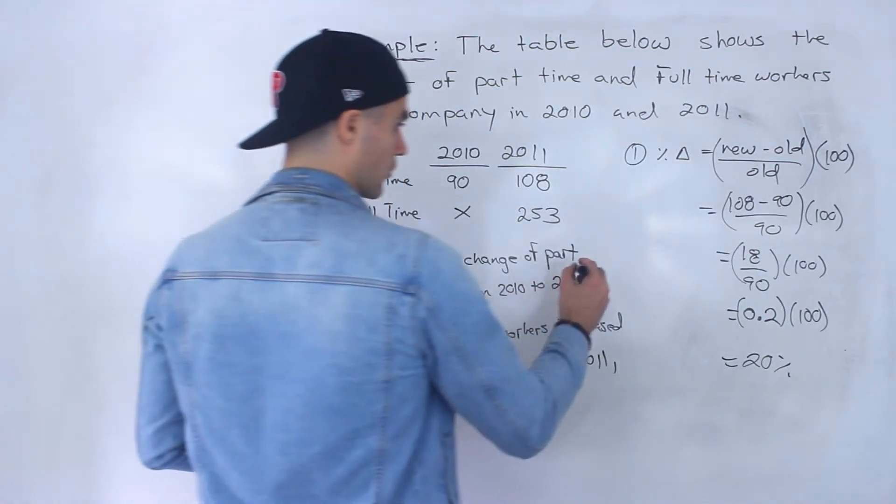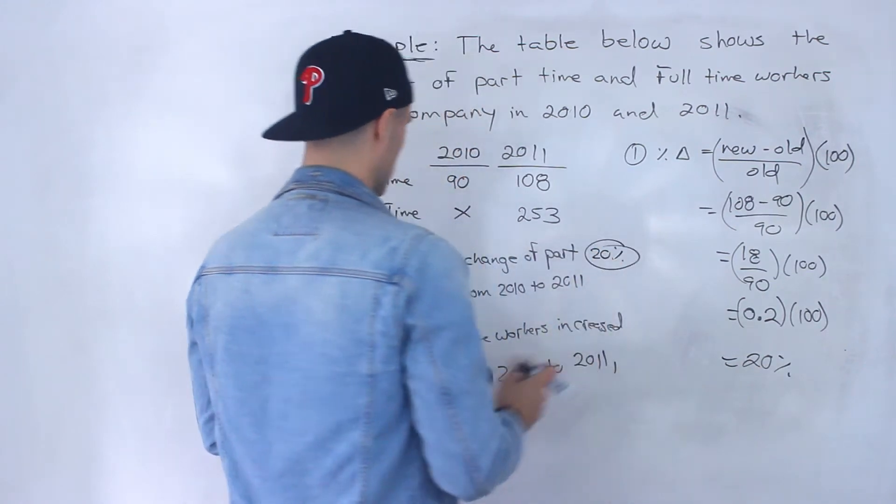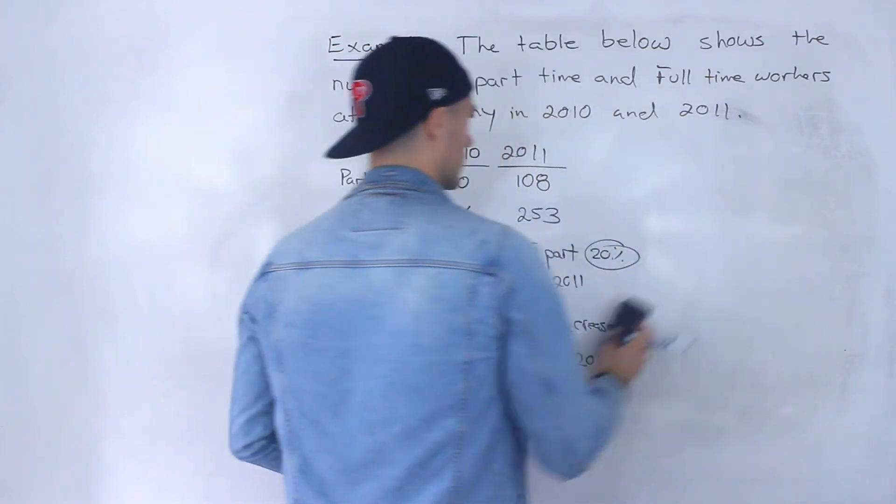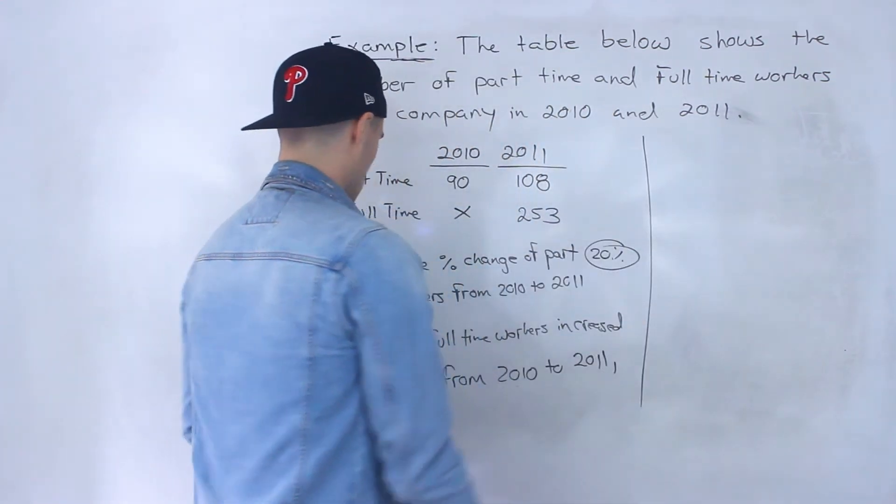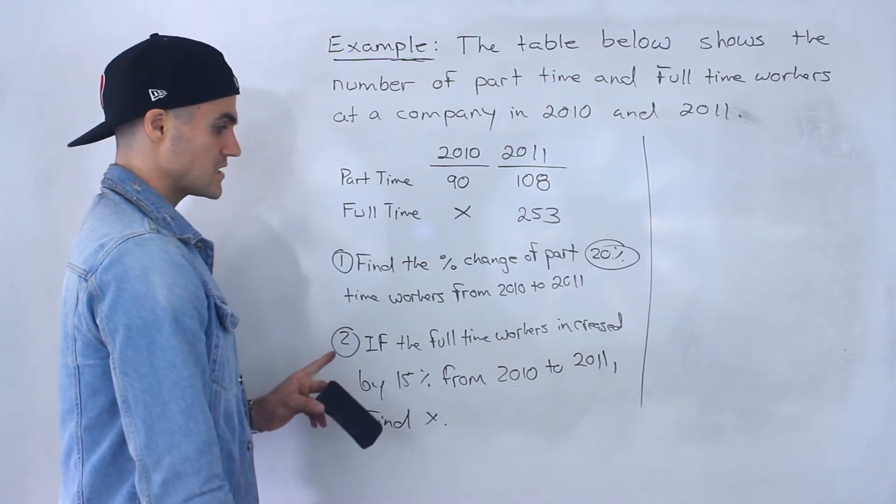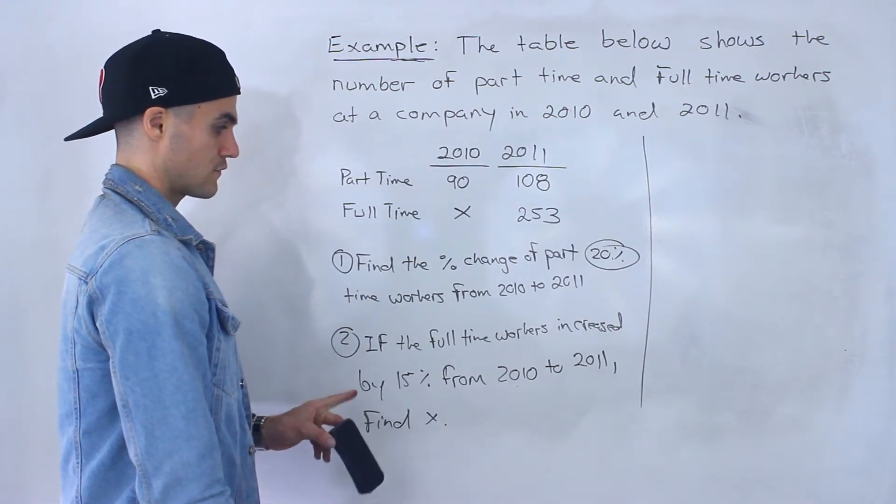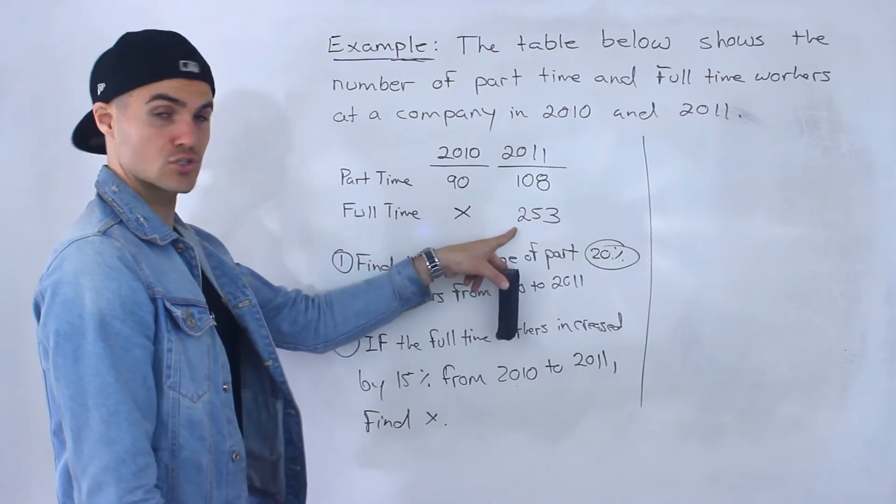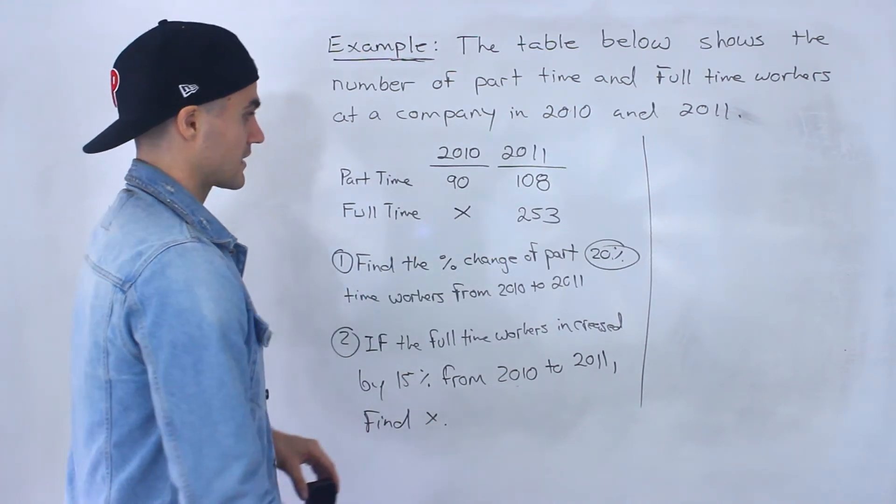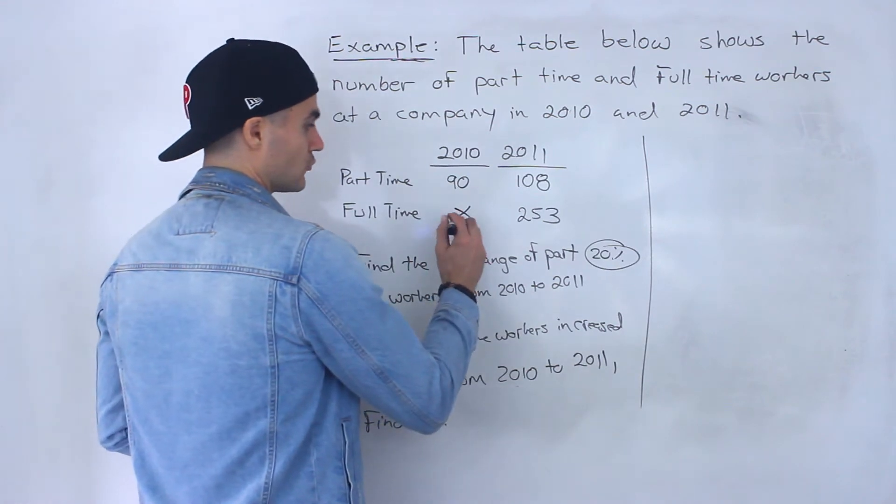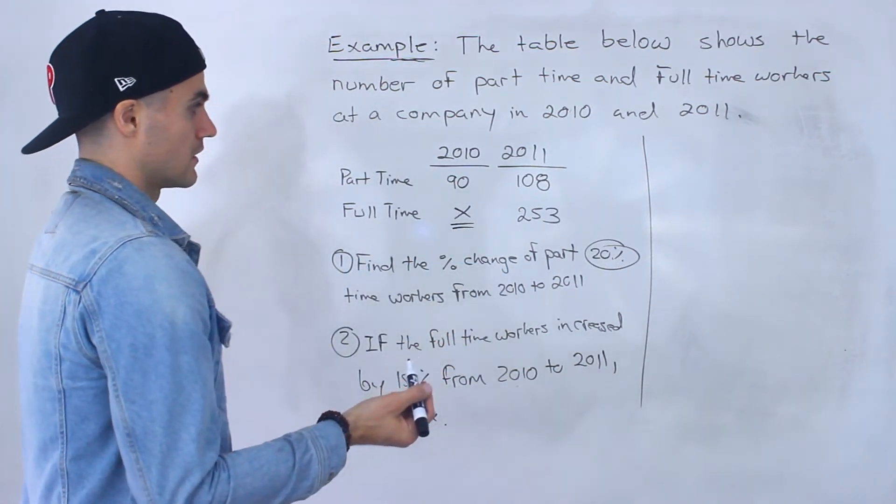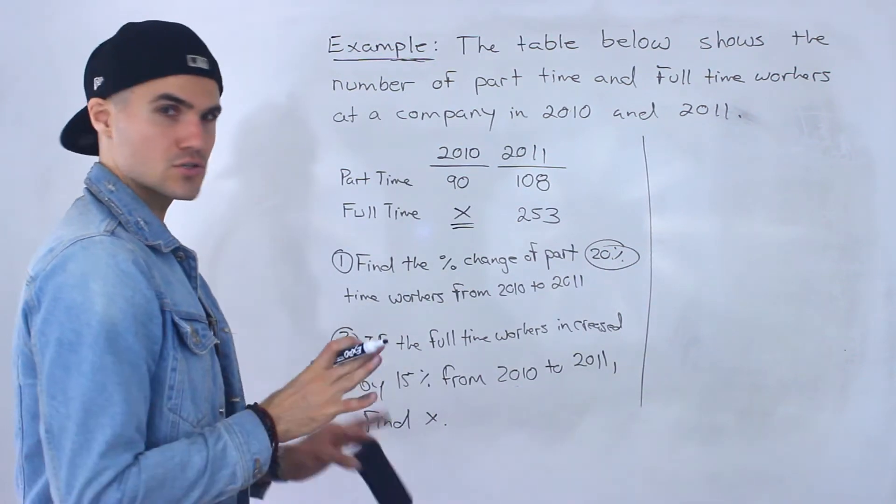What are they asking? If the full-time workers increased by 15 percent from 2010 to 2011, we got to find x. So we got to find the number of full-time workers in 2010. Okay, so different ways to show this.